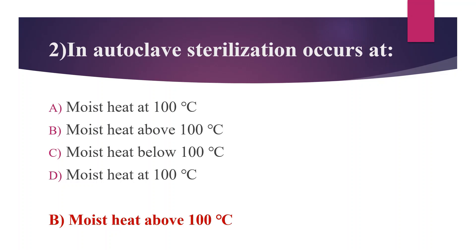The temperature for autoclave is 121°C. Moist heat at 100°C includes boiling, steaming, and tyndallization. Moist heat below 100°C includes pasteurization, water bath, and inspissation.